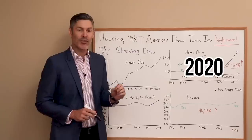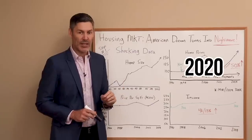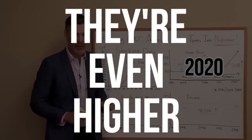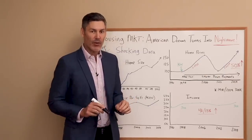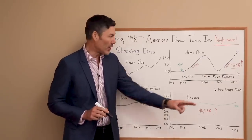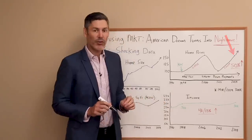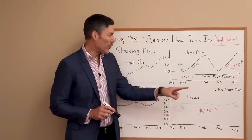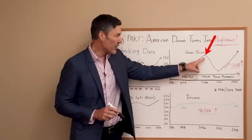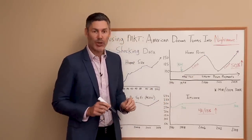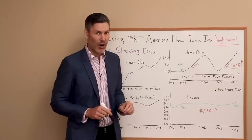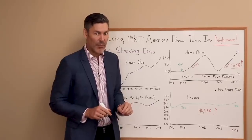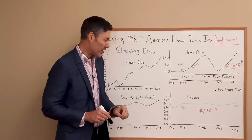In 2019, prices were just as high as they were in 2006. In 2020, they're even higher. So anyone that would argue that we're not in a housing bubble right now in 2020 would also have to argue that we weren't in a housing bubble in 2006. I think that's a pretty tough argument to back up with the data.